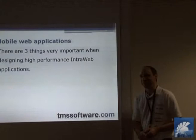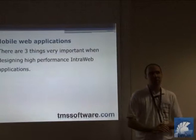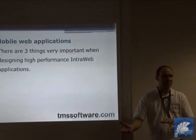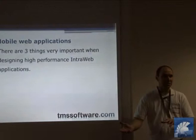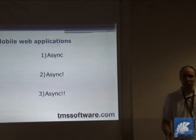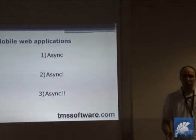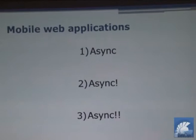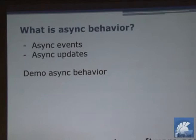In Belgium they say the three most important things in real estate are location, location, location. Applying that to mobile web applications with VCL for the Web, the three things that are extremely important are async, async, and async. You really want to use async to optimize the experience, speed, and bandwidth usage of your mobile web application.